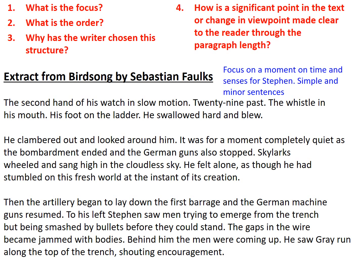As we move on into the next paragraph, which is chunkier, we learn a lot more as it shifts to what is around Stephen and then his sense of isolation. The verbs — 'he clambered out and looked around him. It was for a moment completely quiet as the bombardment ended and the German guns also stopped' — give good context of what's around him. 'Skylarks wheeled and sang high in the cloudless sky' — there's a freedom of nature there. 'He felt alone as though he had stumbled on this fresh world at the instant of its creation.' So there's a disconnect now from Stephen's experience of this noisy, brutal war zone. So there's a sense that we need to know, first of all, this moment in time, but in the second paragraph we're given the detail around him.